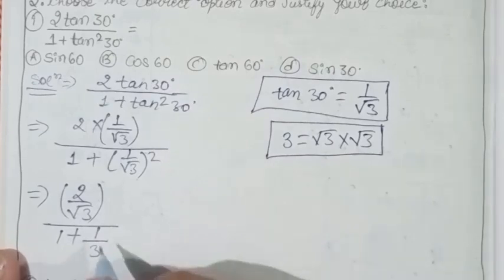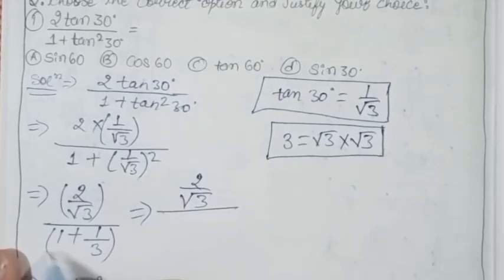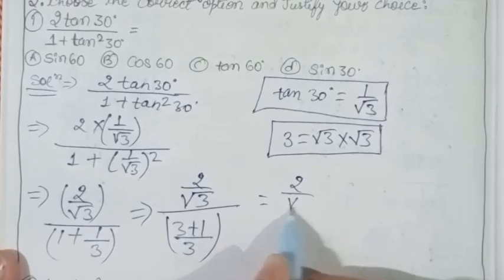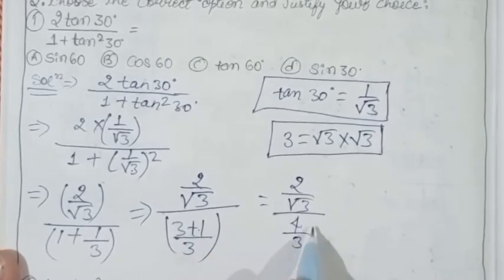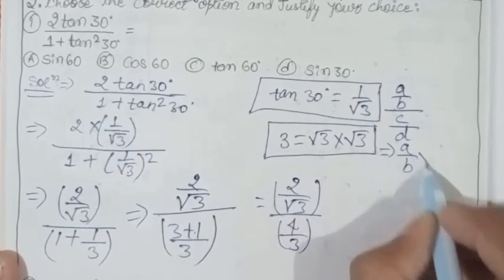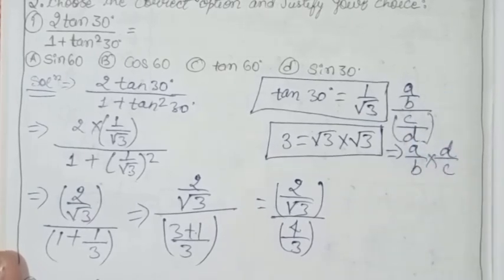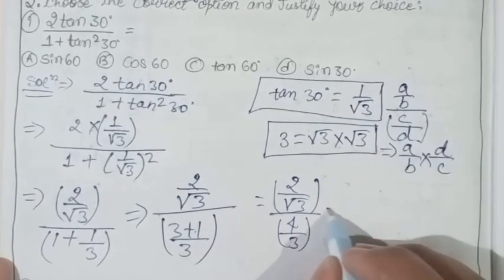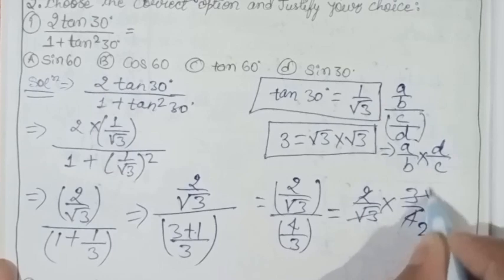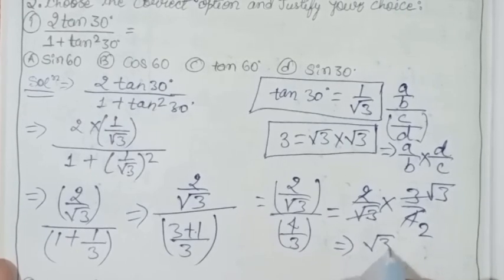Now let's see what we do. We will write it as 2 upon root 3, upon 1 plus 1 upon 3, which gives us 3 upon 4 upon 3. Simplifying this gives us 2 upon root 3 times 3 upon 4, which equals root 3 upon 2. This is the answer.